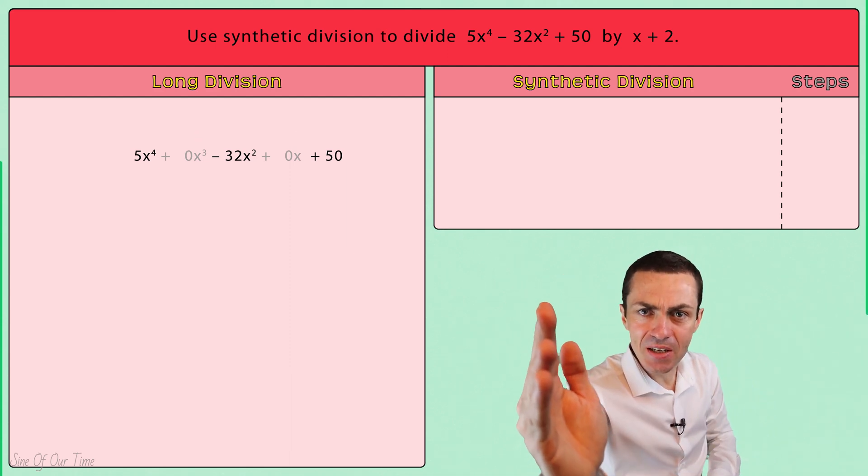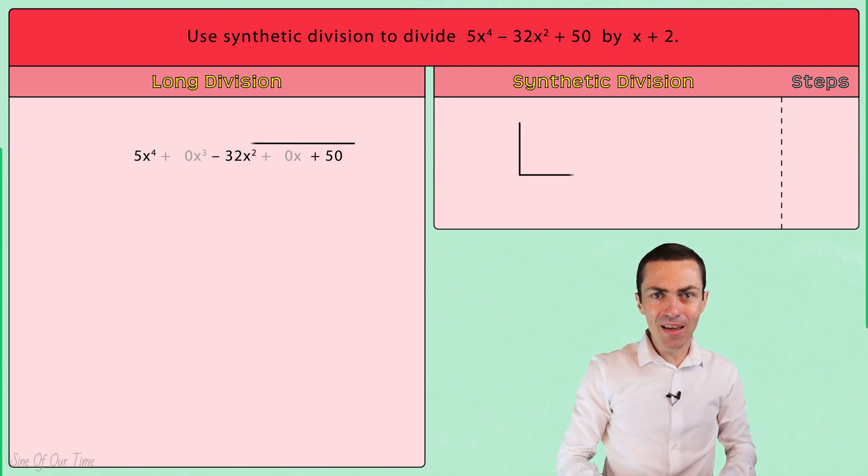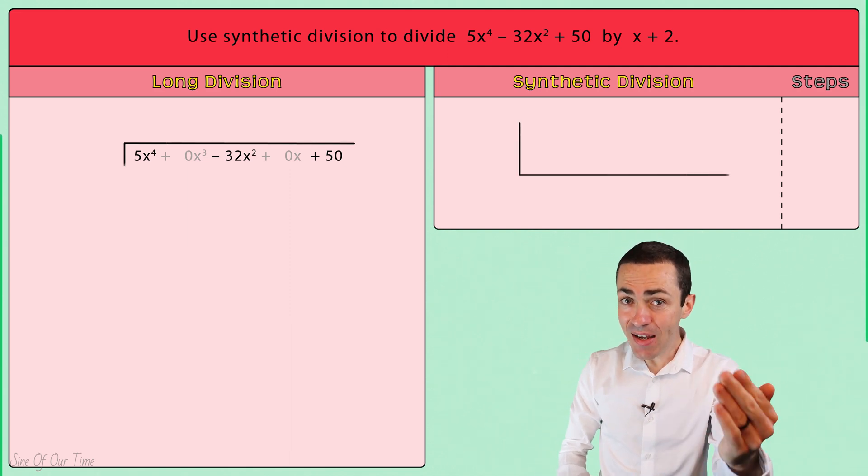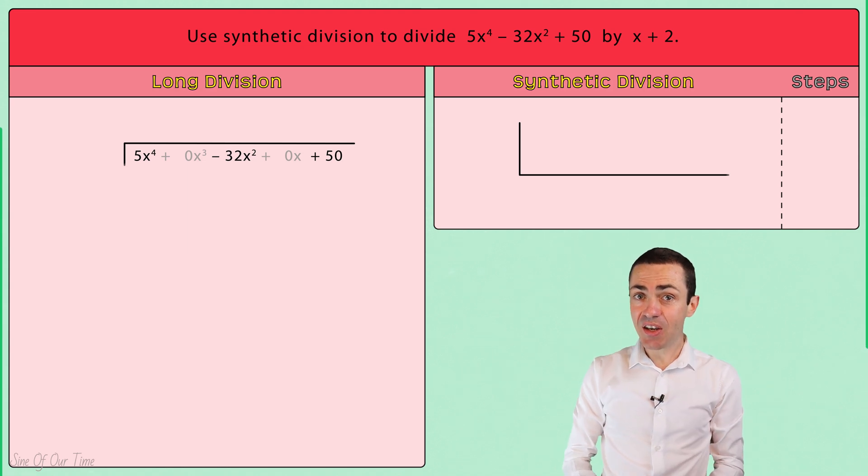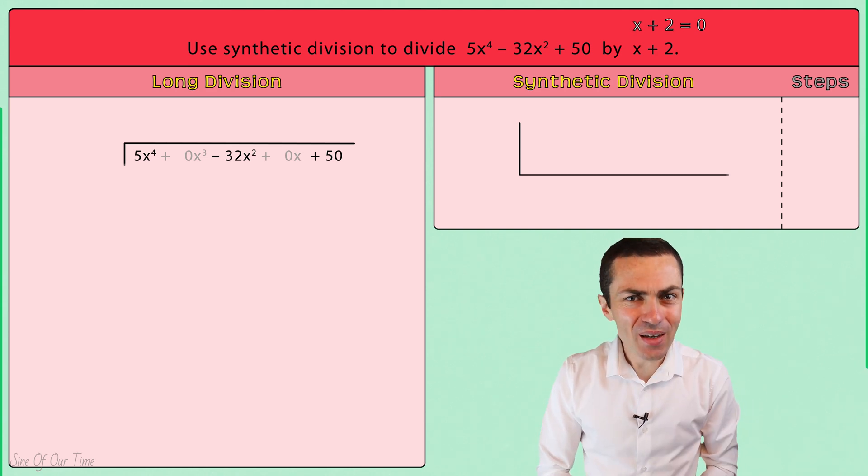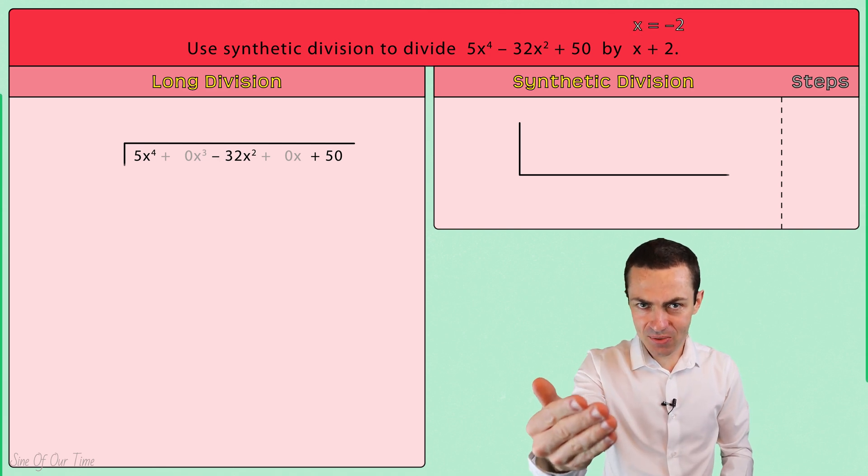Now let's begin by writing down the synthetic division symbol and at the top on the left let's write down the value of X that makes the divisor equal to zero. Since the divisor is X plus 2, the value of X that makes that equal to zero is of course negative 2.